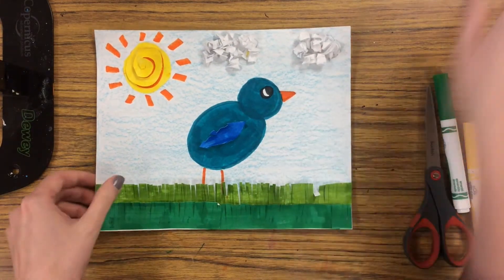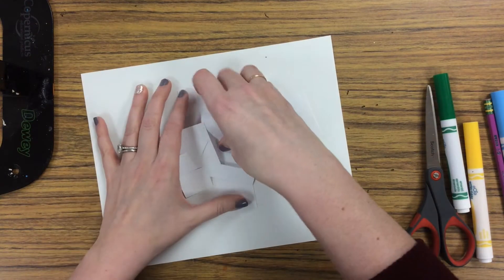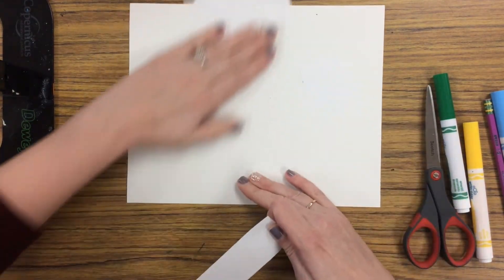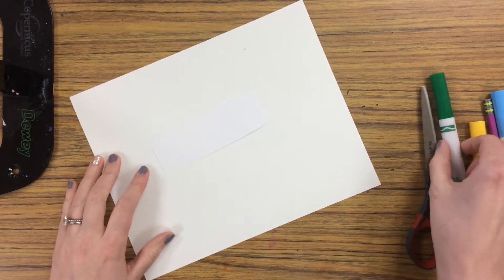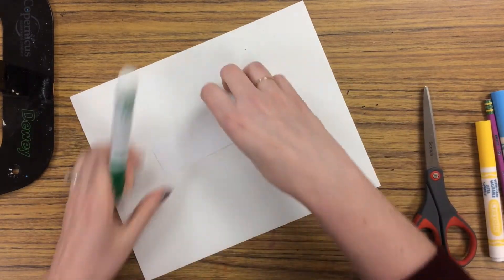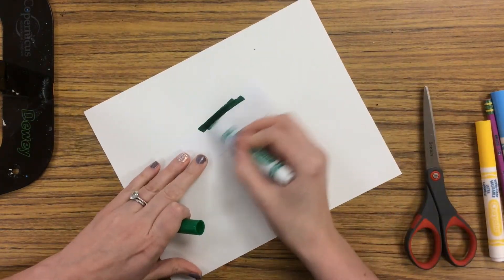The first thing we're gonna do is create some fringe. This can work really well for grass, especially if you're doing an outdoor landscape drawing. So I'm gonna begin with a small strip of paper and I'm going to color it in green first with my marker.